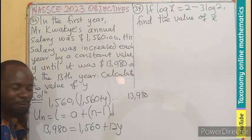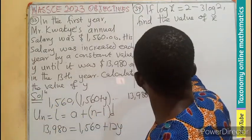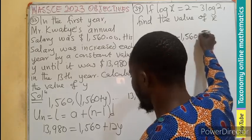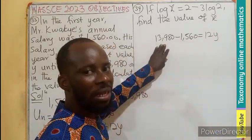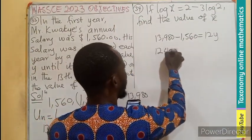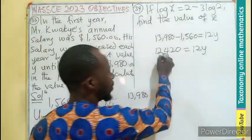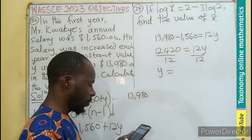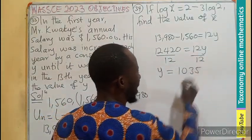A linear equation is generated. Remember this will come here as 13,980 - 1,560 = 29y. So we are going to subtract this from this. And that will give us 12,420 = 29y. We are looking for y, right? So divide by 29, y is going to be 1,035. So therefore,